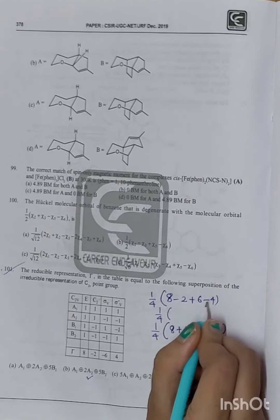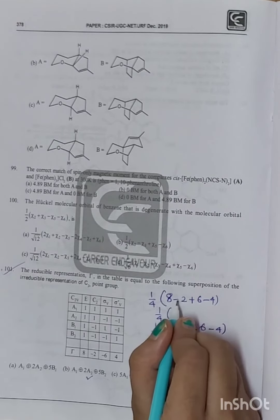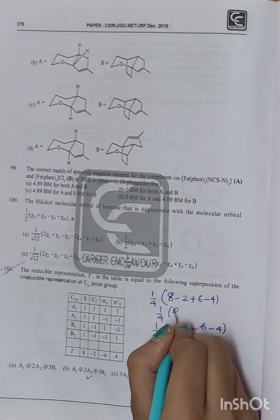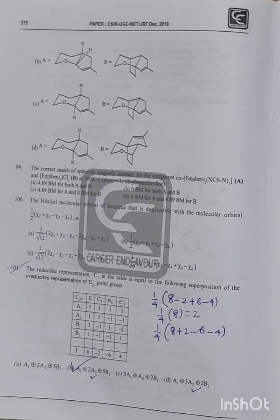So this can happen. 1 upon 4. 8 minus 2 is 6. Okay. 6 plus 6 is 12. 12 minus 4 is 8. I mean, 2 A2. So 2 A2. This can be answered. Thank you.